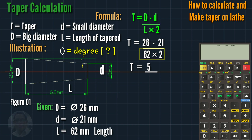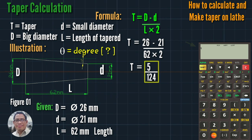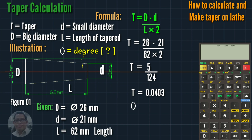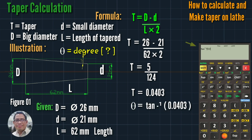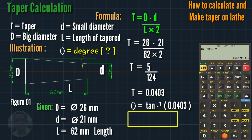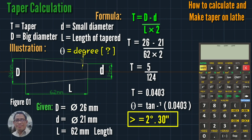Then 62 times 2 is 124. So 5 divided by 124 equals 0.0403. Then theta equals inverse tangent of 0.0403, so the angle is 2 degrees and 30 seconds. Now we proceed to actual machining.